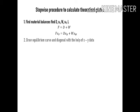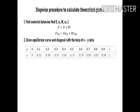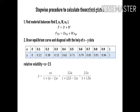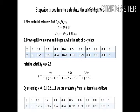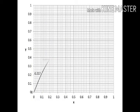The next step is to draw the equilibrium curve and the diagonal using the given X-Y data. The X-Y data may be provided in a table. If relative volatility is given, we can calculate X-Y data using the formula: Y = (α·X) / (1 + (α − 1)·X). To generate the data, we assume X values of 0, 0.1, 0.2, up to 1.0 and calculate the corresponding Y values, as shown in the table. Using this X-Y data, we then draw the equilibrium curve.